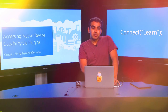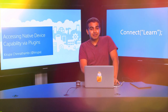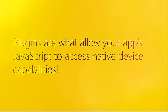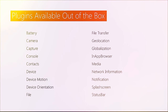Hello everybody. One of the things that sets apart Apache Cordova apps from web apps is that Cordova apps can access native device capabilities, handled by something known as plugins. Plugins are what allow your app's JavaScript to access these capabilities, including your battery, camera, geolocation, media access APIs, contacts, and a whole lot more.